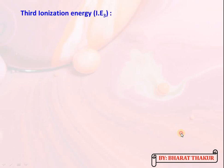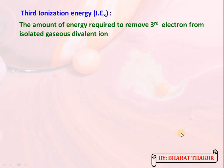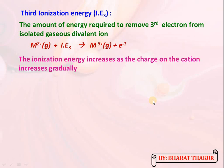Third ionization energy is the energy required to remove the third electron from an isolated gaseous divalent ion (M²⁺), forming M³⁺. Note: ionization energy increases as the charge on the cation increases — the energy required to remove the first electron is less, the second more, and the third even more.